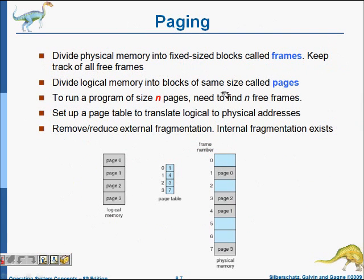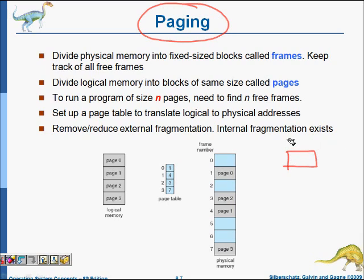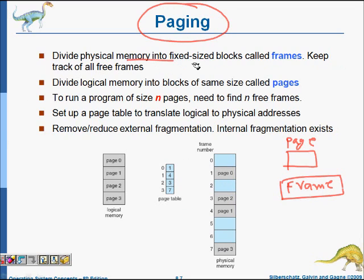To remove all these problems, the concept of paging comes in. Instead of allocating a contiguous block of memory for each process, we have a smallest unit of memory called a page for a process, and it is called a frame for physical memory. So physical memory has frames and logical memory has pages, and their sizes are equal. Divide physical memory into fixed-size blocks called frames.